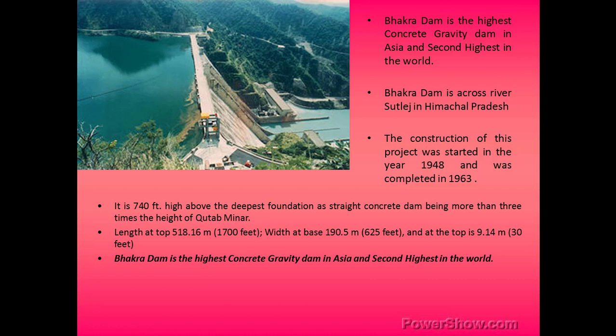Here is an example of gravity dams. Bakra Dam is the highest gravity concrete dam in Asia and the second highest in the world. It is constructed across river Sutlej in Himachal Pradesh. Construction of this project was started in 1948 and was completed in 1963. It is 750 feet high above the deepest foundation — a straight concrete dam more than three times the height of Qutub Minar.